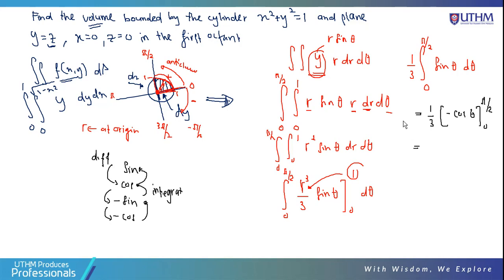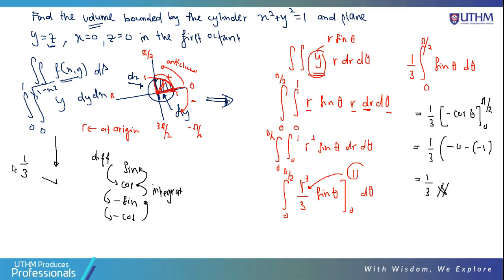Note: in your calculator, make sure the mode is set correctly — degree or radian. If in degree mode, use 90° instead of π/2. cos(90°) = 0 and cos(0°) = 1. So the final answer is 1/3, which matches the answer from the Cartesian coordinate approach. This confirms both methods give the same result, but polar is easier.